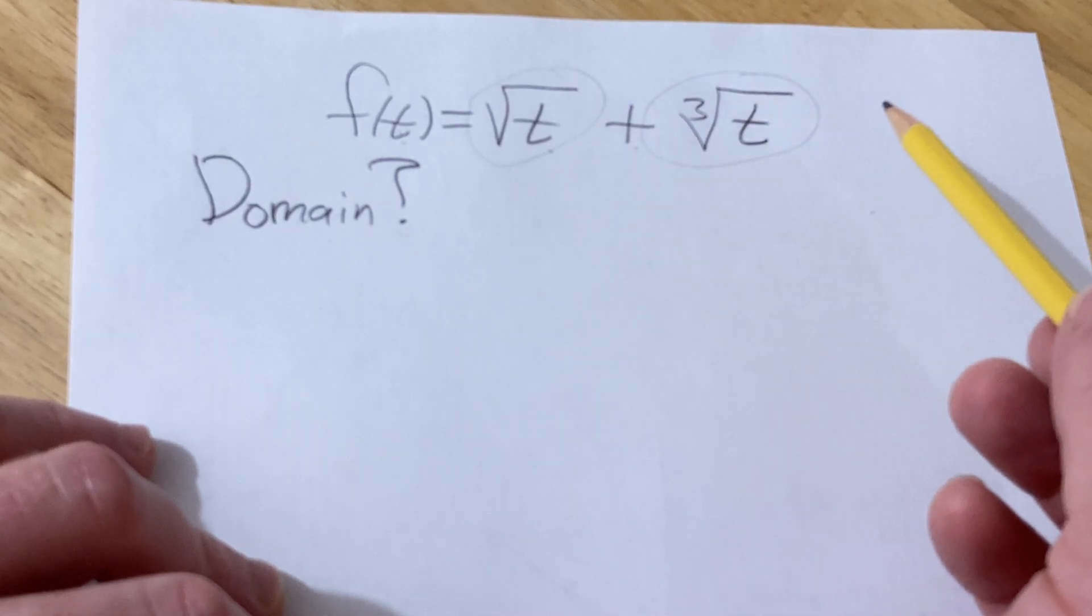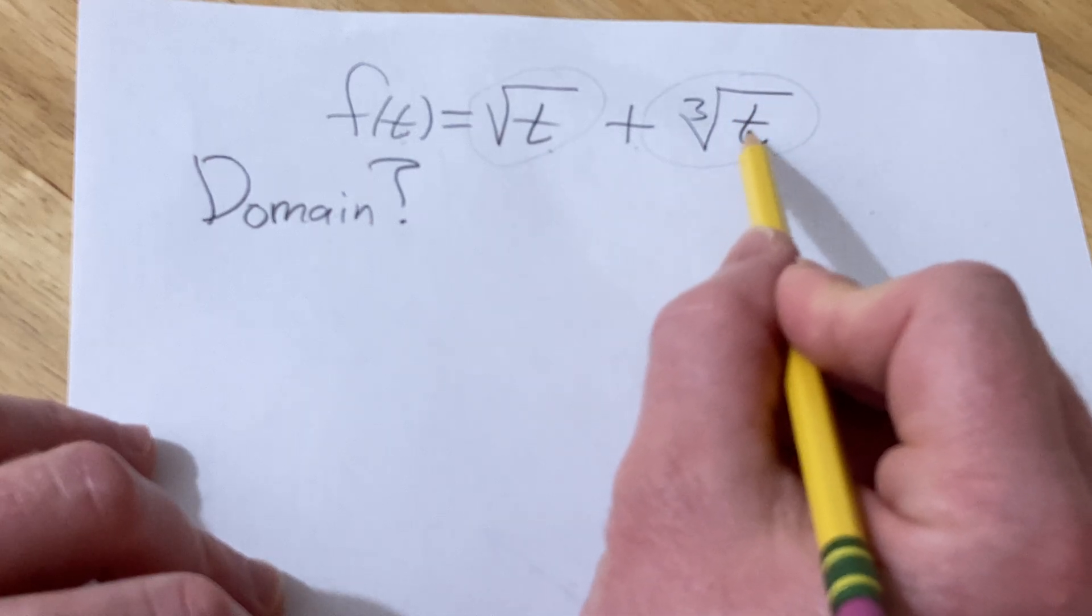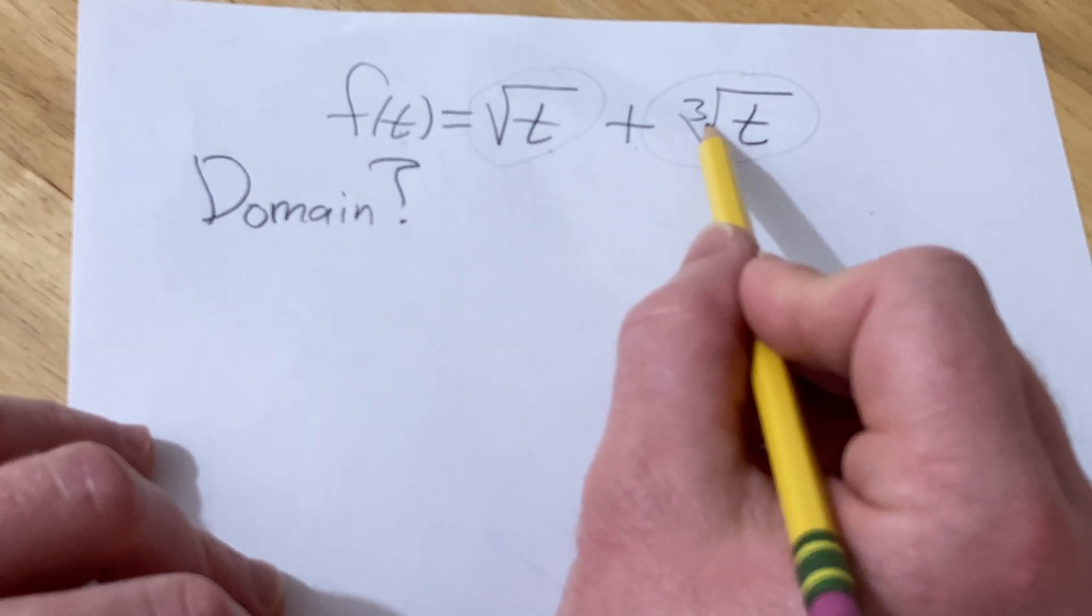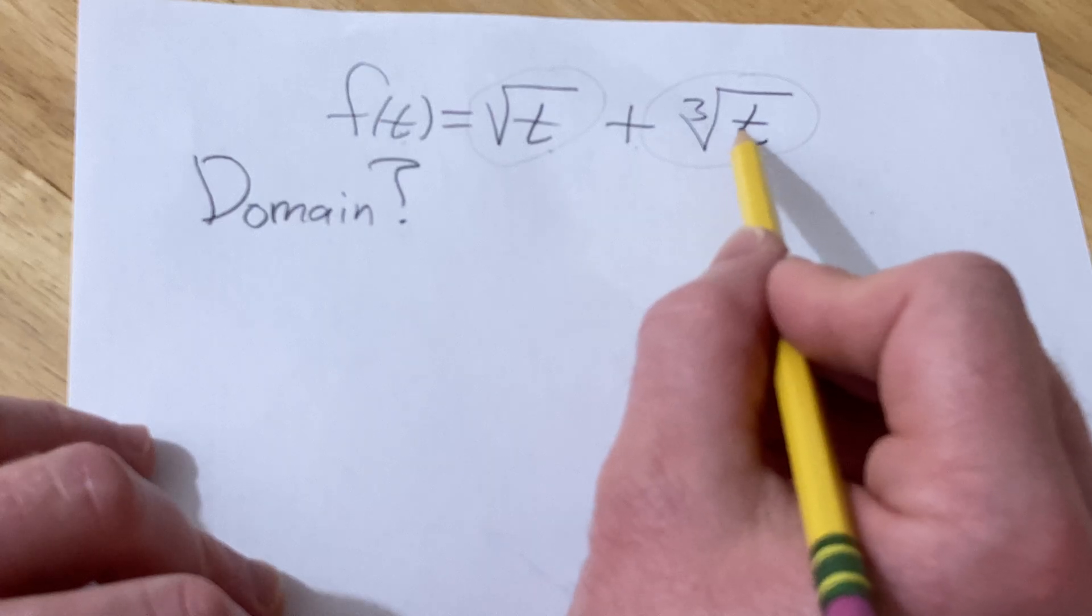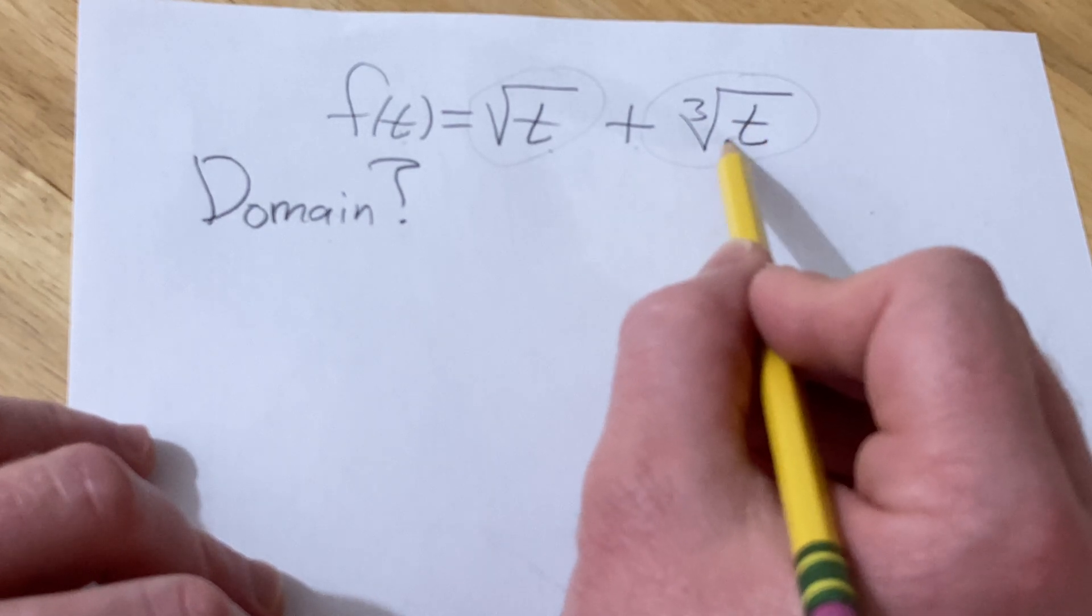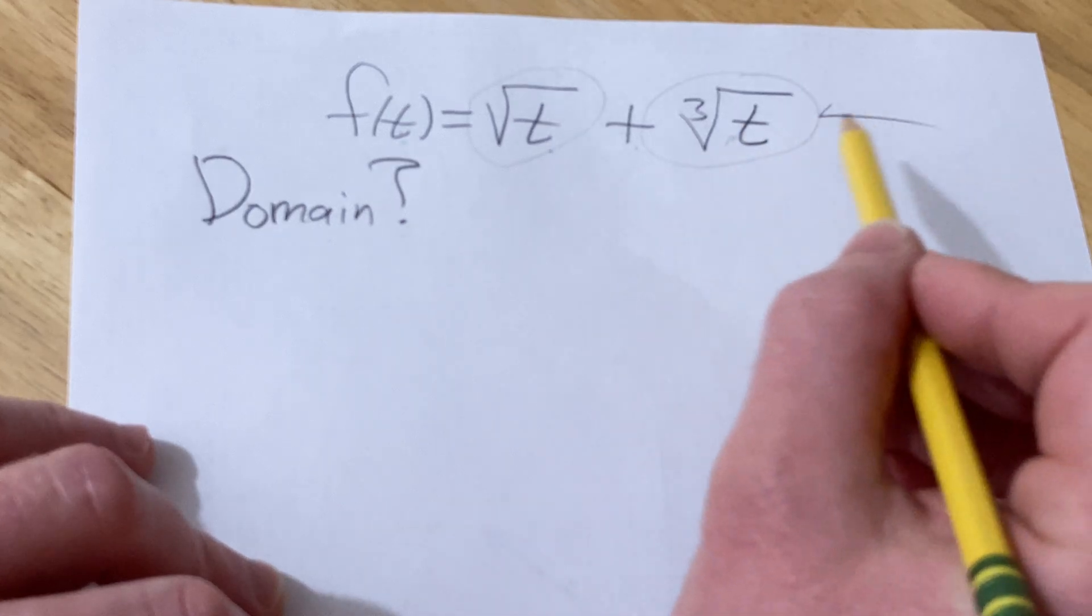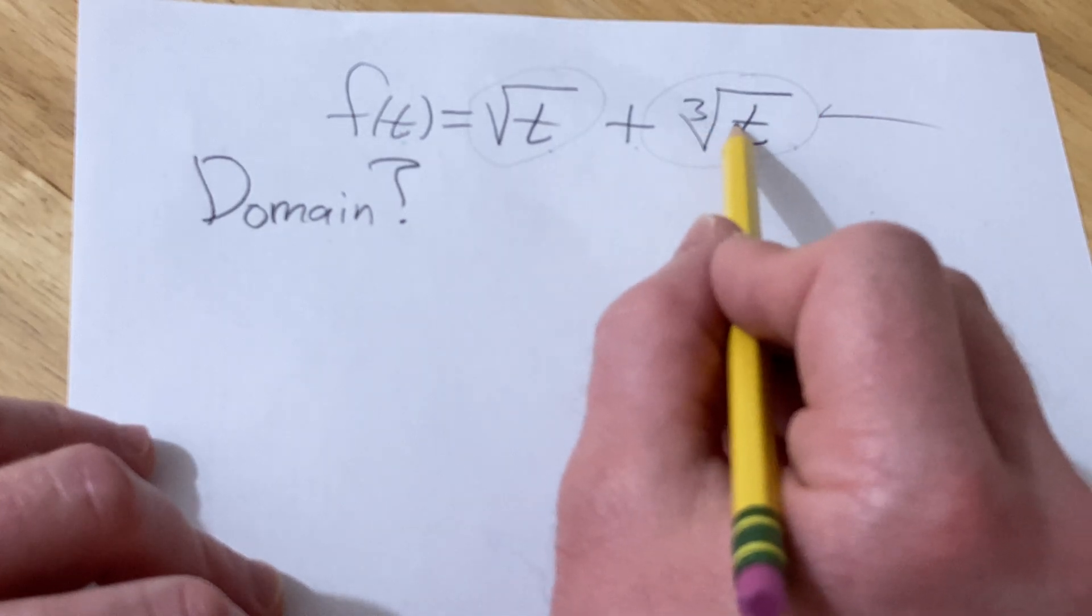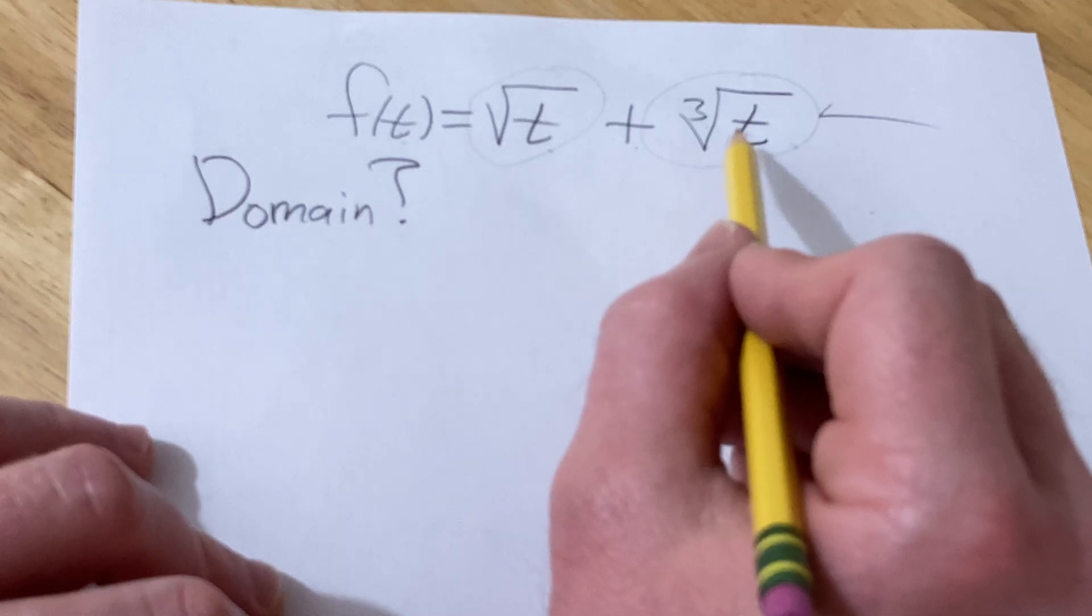It basically means that you're going to get a number. So here, whenever you have a cube root, you can plug in any value here. There's no issues. You can plug in negative numbers, positive numbers, zero. So everything goes here. The domain of just this function is all real numbers, so there's no restrictions at all.